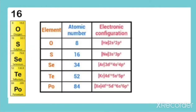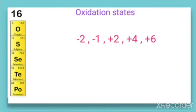All these elements have ns² and p⁴ configuration in their outermost shell. Therefore, the atoms of these elements try to gain or share two electrons to achieve noble gas configuration. So, these usually form oxidation states like -2, -1, +2, +4, and +6. That means these elements show two types of oxidation state: negative oxidation state and positive oxidation state.